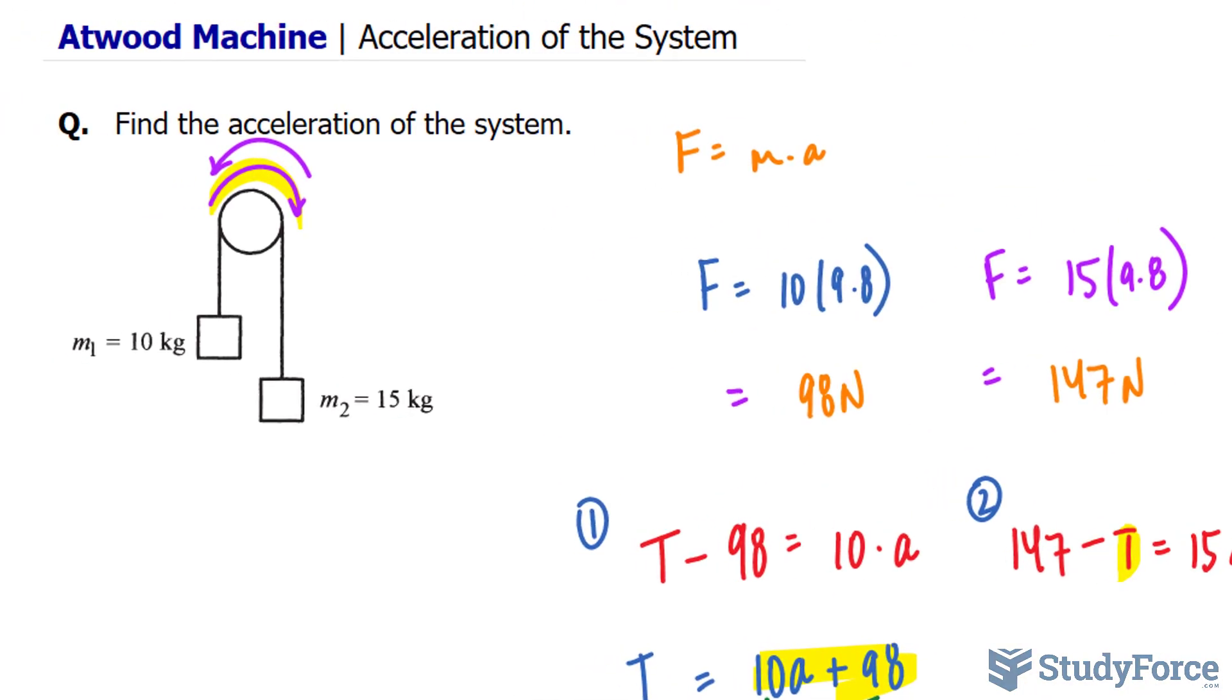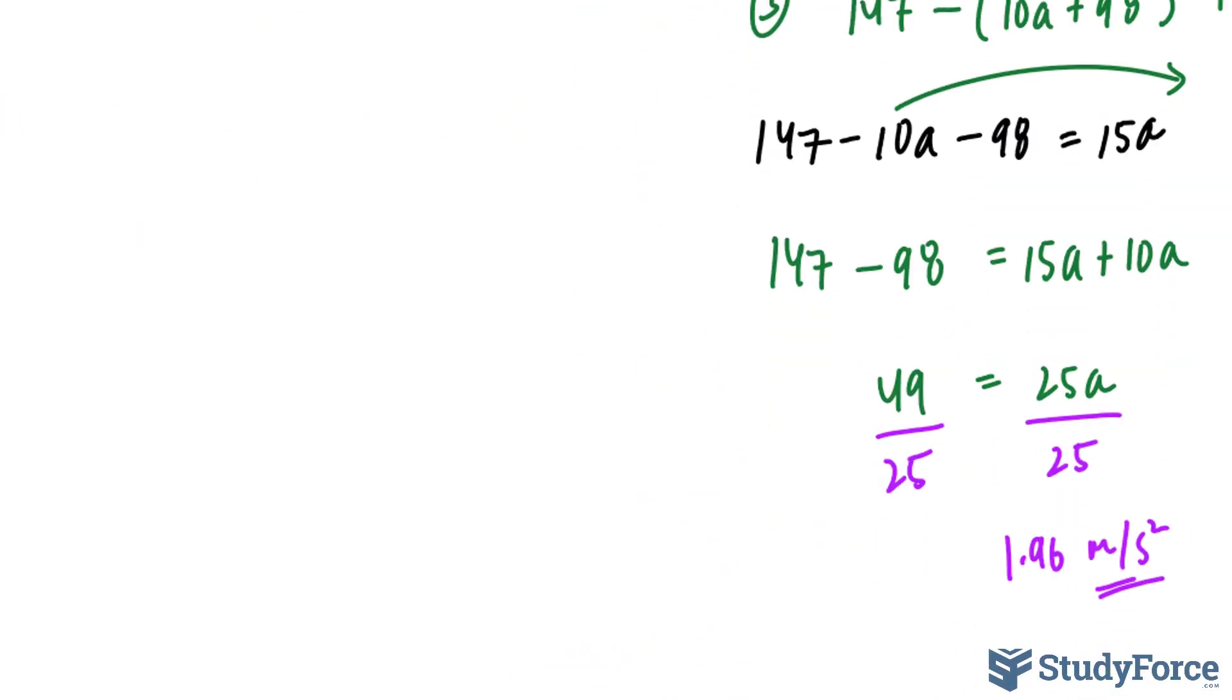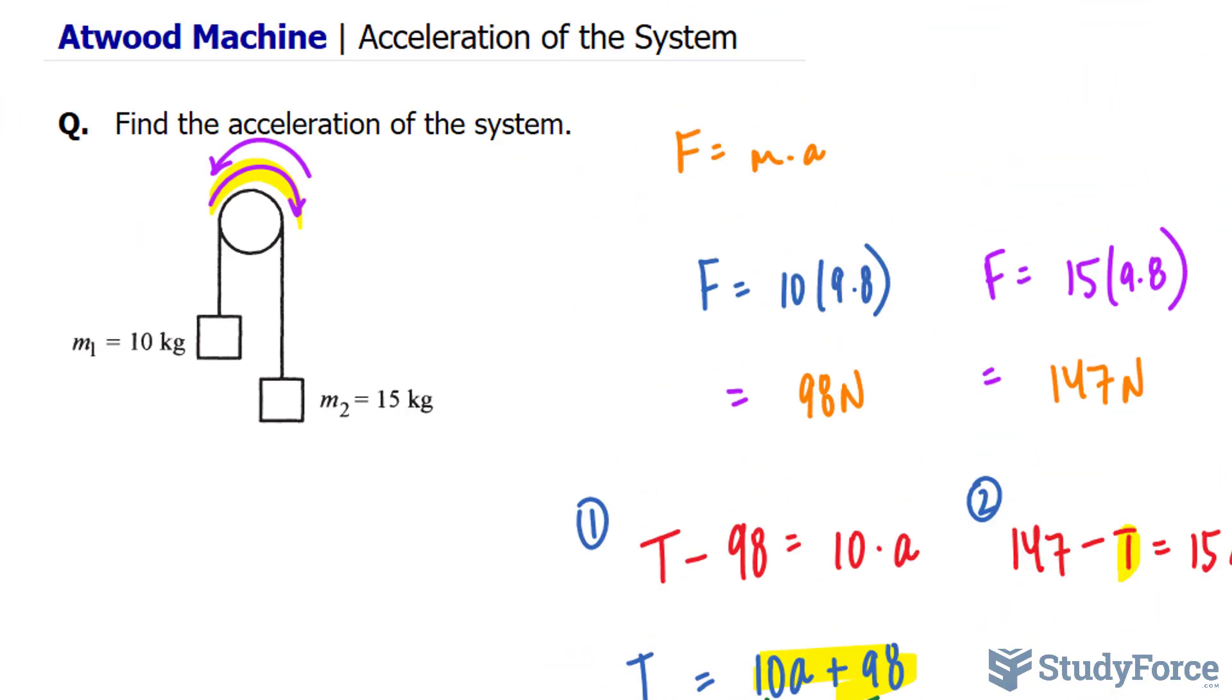Now, had we assumed that it is going counterclockwise, this value would have been negative. And in that case, you would interpret it to be going clockwise. Since the acceleration is negative, and you're assuming that it's going to go counterclockwise, then a negative value tells us the opposite.